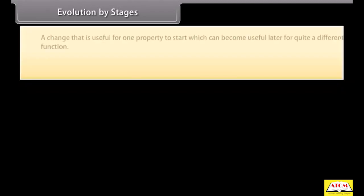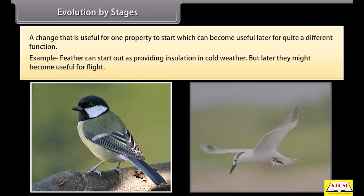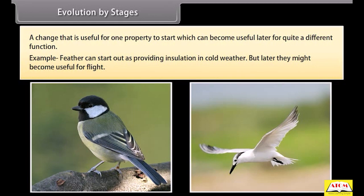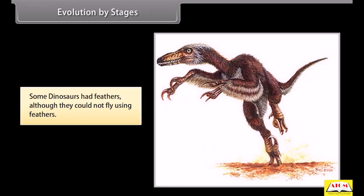Evolution by stages refers to a change that is useful for one property to start with, which can become useful later for quite a different function. For example, feathers can start out as providing insulation in cold weather but later become useful for flight. Some dinosaurs had feathers, although they could not fly using them.